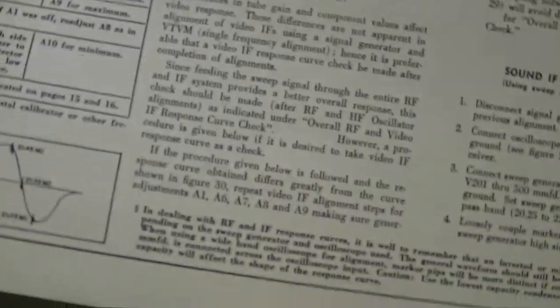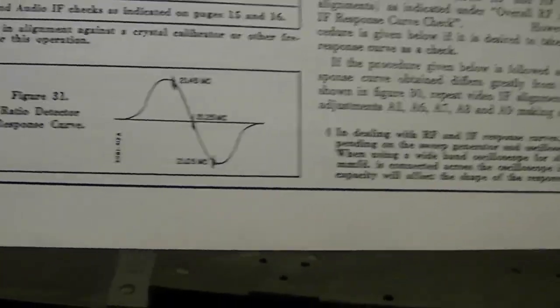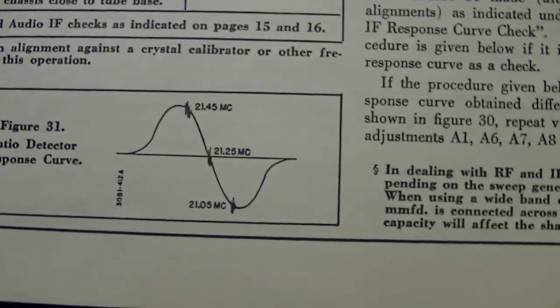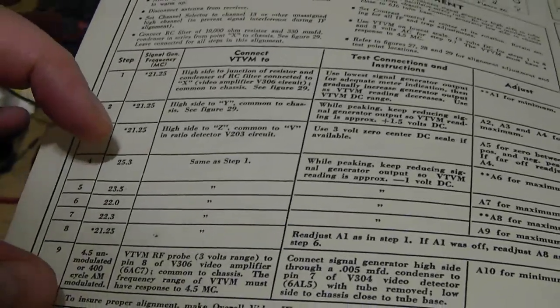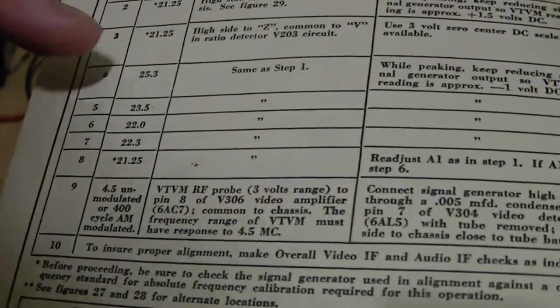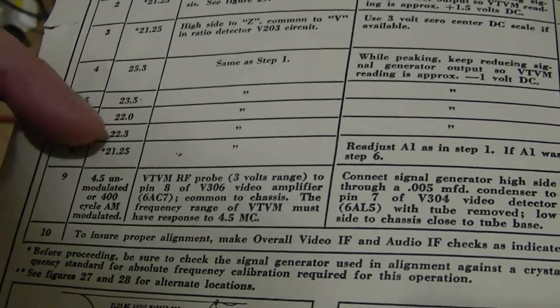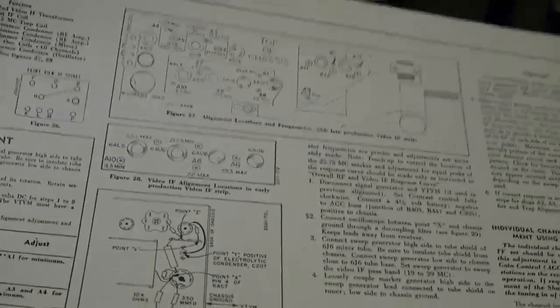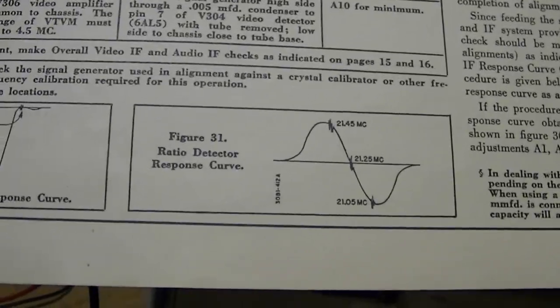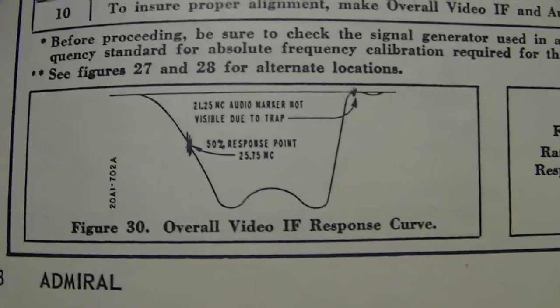I could hook up a sweep generator if I really wanted to double check that. But what I'm going to do now is since I've got all the stuff right here I'm going to just blow through the video portion which is the stuff here. You just dial in these frequencies 25.3, 23.5, 22.0, 22.3 and you just peek into these coils for a maximum. It's what they call a stagger tuned IF. Each stage is tuned to a slightly different frequency and you add up all the responses and you get a nice wide plateau or more like a double hump response.